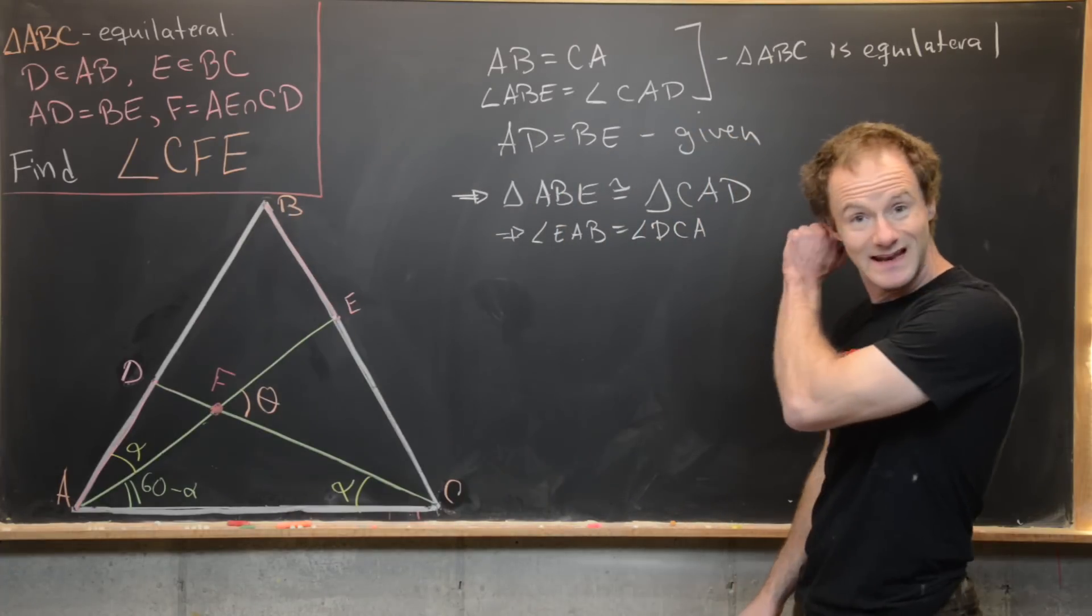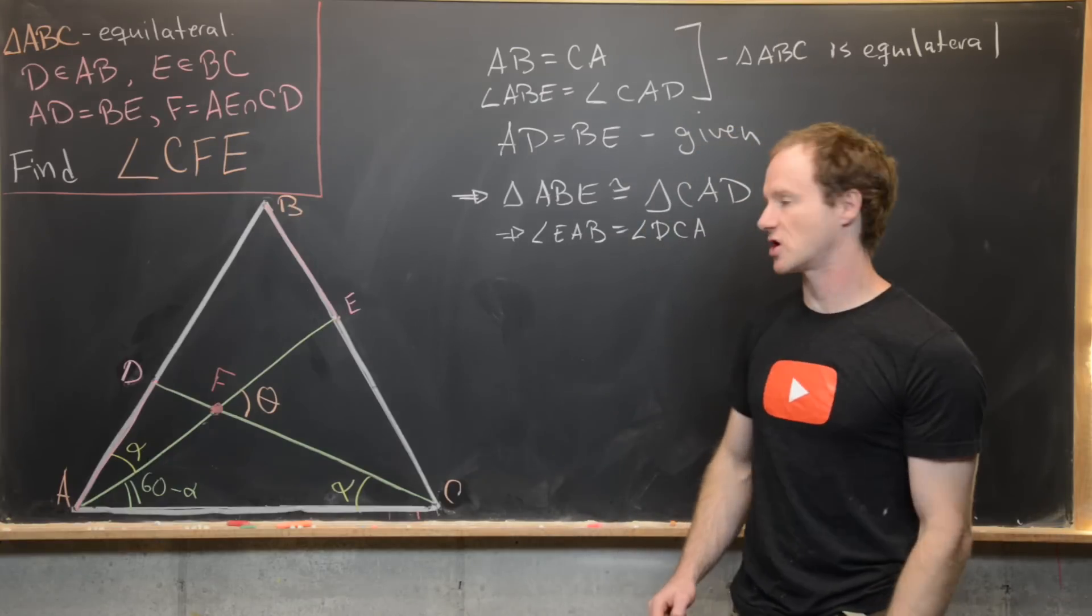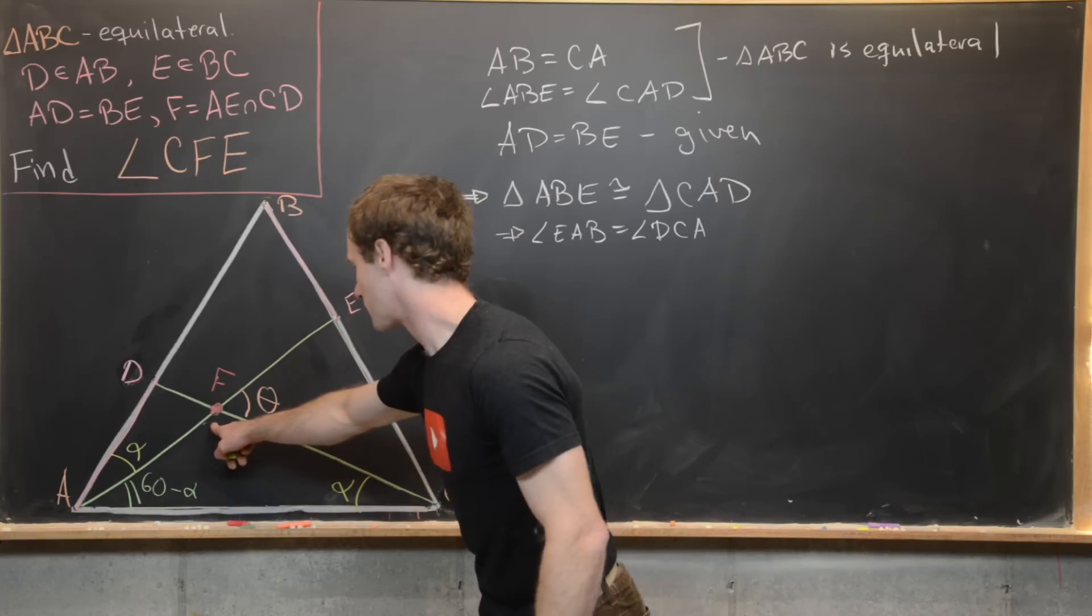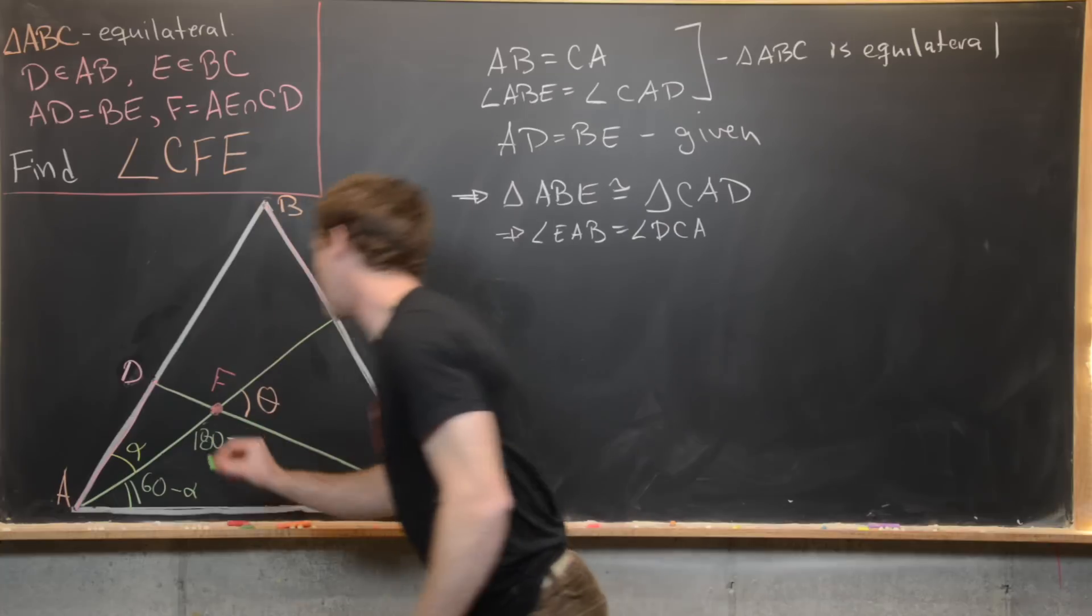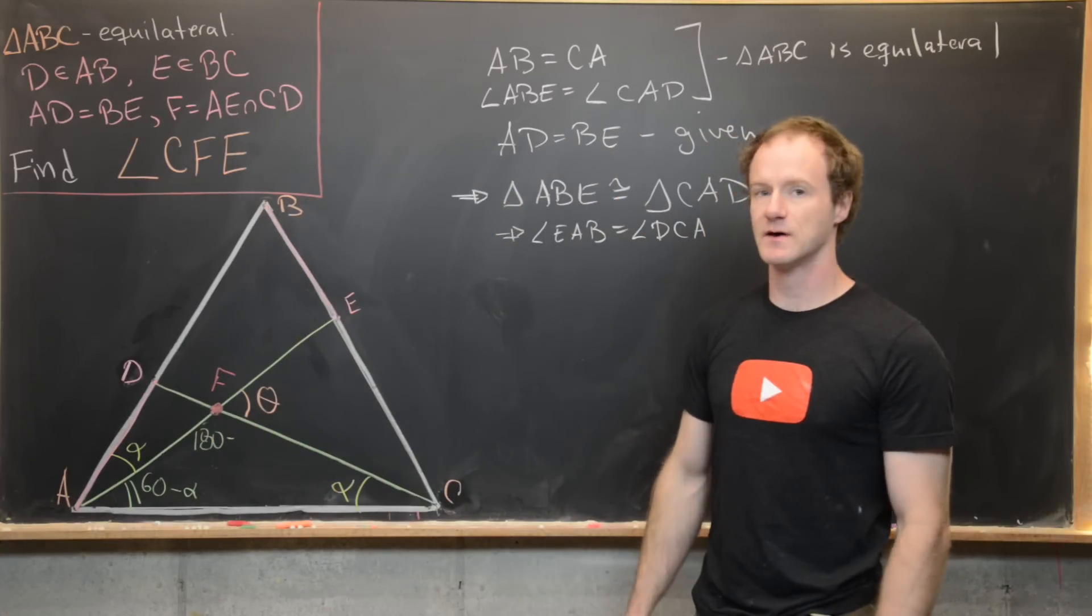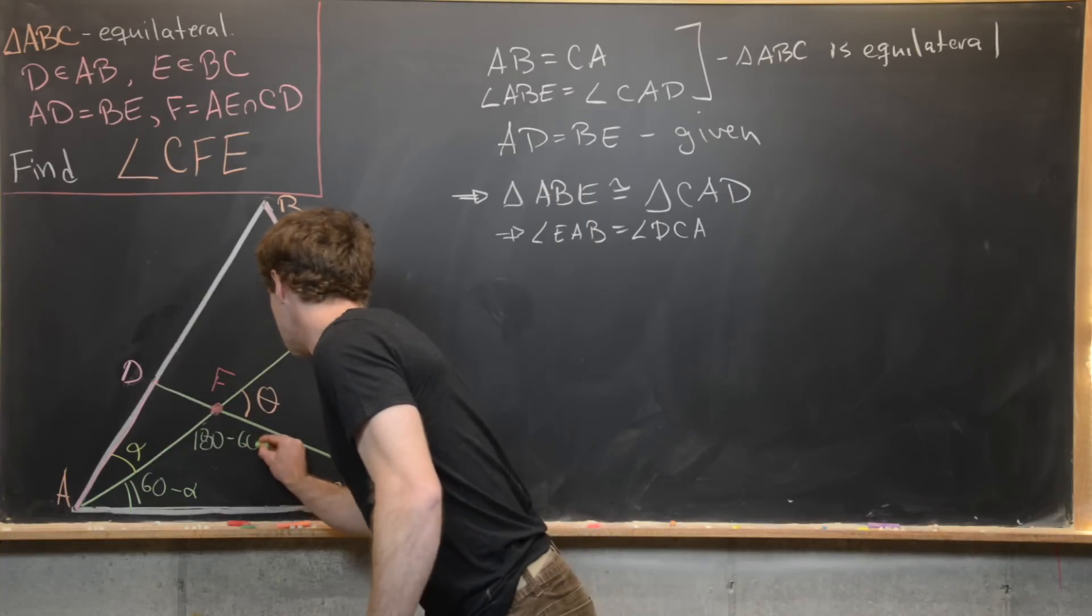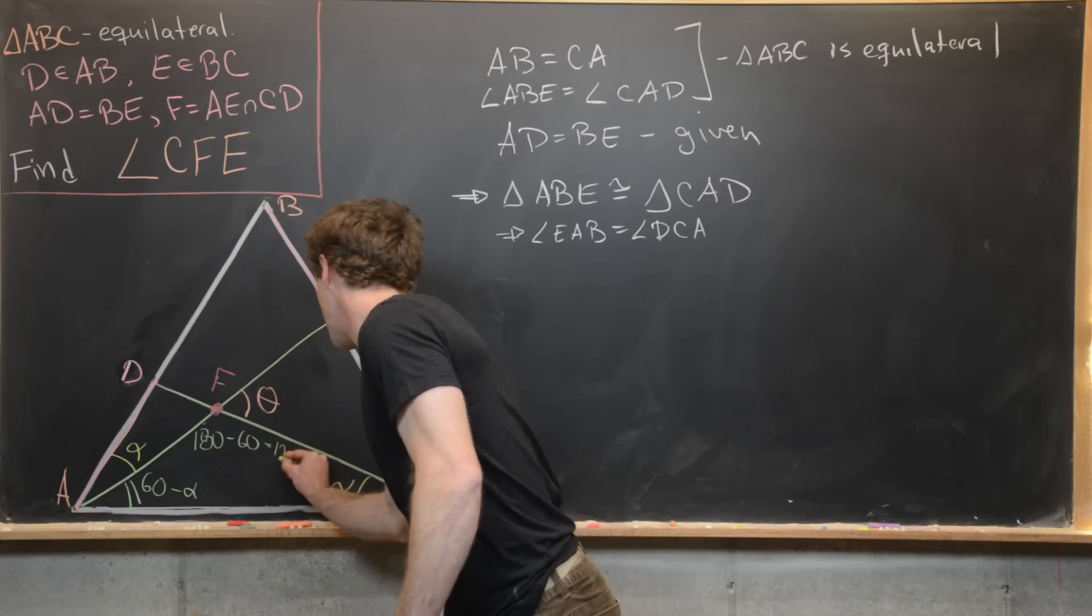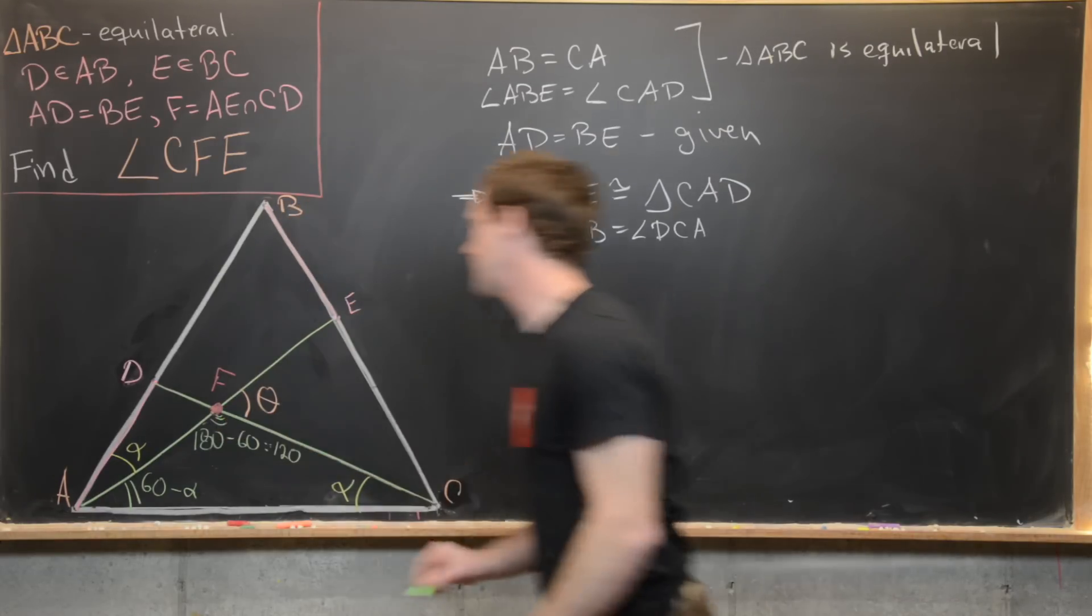And then next we know that the sum of the angles of a triangle add up to 180. So that means that this number right here is going to be 180 minus 60 minus alpha plus alpha, but 60 minus alpha plus alpha is just 60. So we get that right there. So that's going to make this 120. So that's this angle measurement right here.